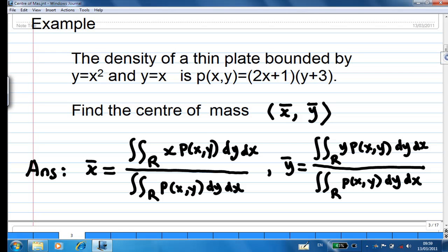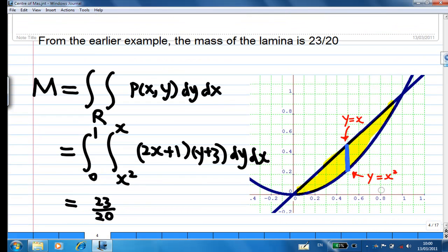So we are going to use the formula of x̄ and ȳ. First, where is the mass? Notice that we actually found the mass in the earlier example, which is 23 over 30, where the region R is the yellow region bounded by y equal to x and y equal to x squared.